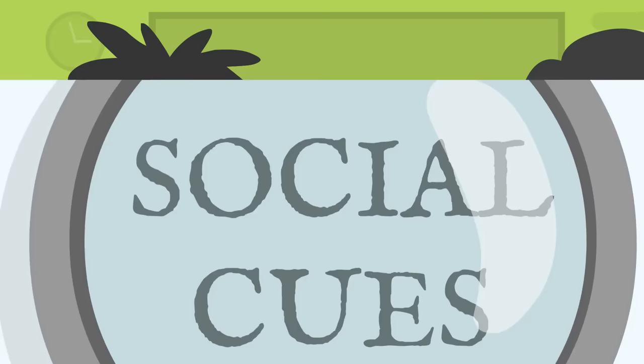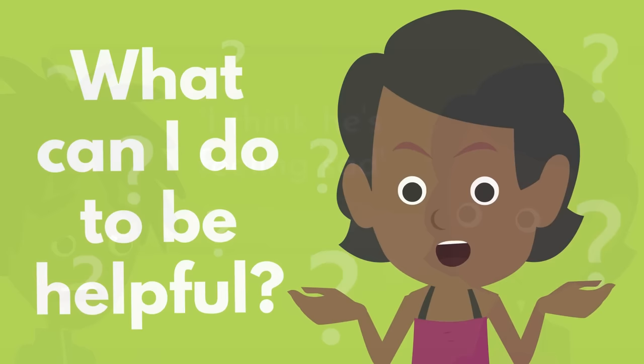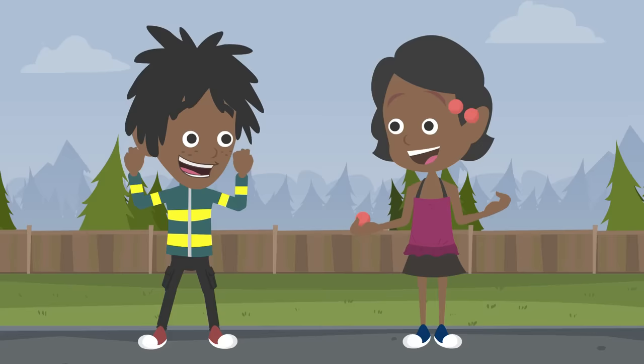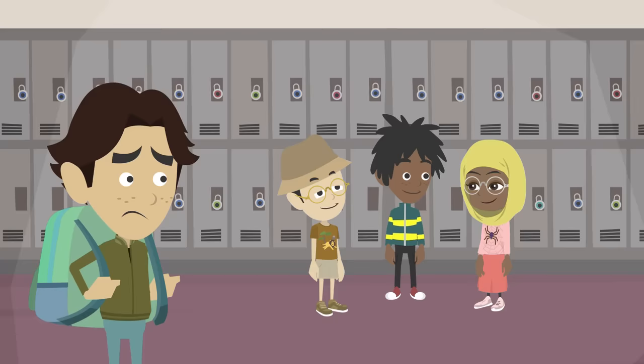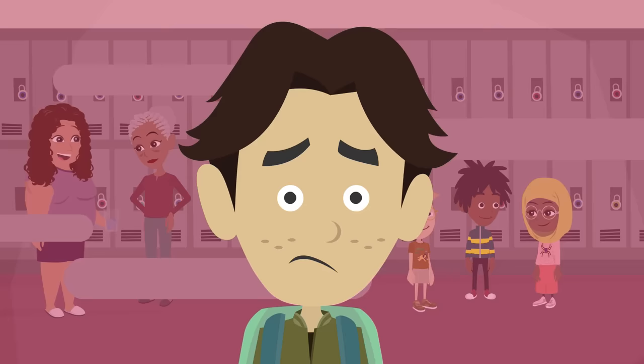Number three: practice using empathy. Empathy is being able to understand how someone might be thinking or feeling. We can tell how others are feeling by their social cues. Start paying attention to people's faces and body language to get a better idea of how they might feel, then ask yourself, 'What can I do to be helpful to this person?' Using empathy helps you to better get along with others.